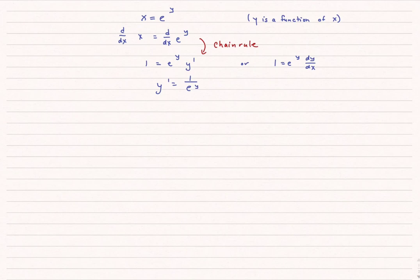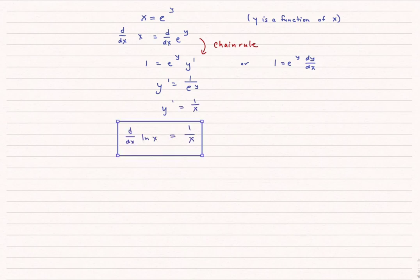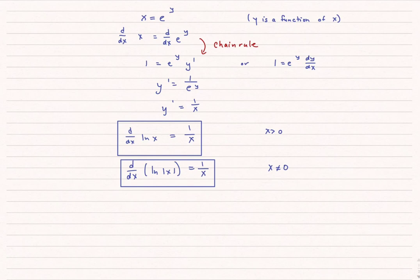That's not particularly helpful because we want this in terms of x. But since x is simply equal to e to the y, y prime equals 1 over x. Therefore, the derivative of natural log of x is 1 over x. We need to specify that this is when x is greater than zero.